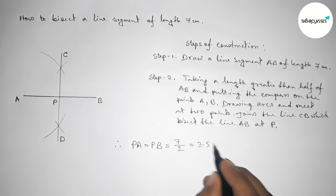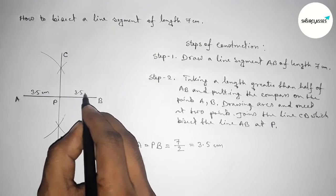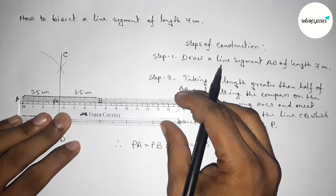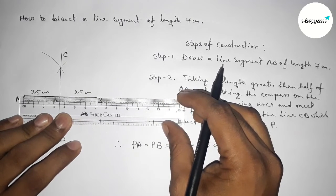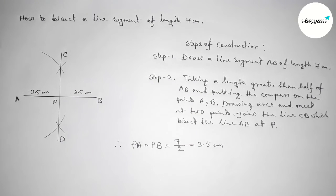So this length is 3.5, this length is 3.5. So now I'm going to check this by using scale. So this is 7 and this is 3.5, perfectly.